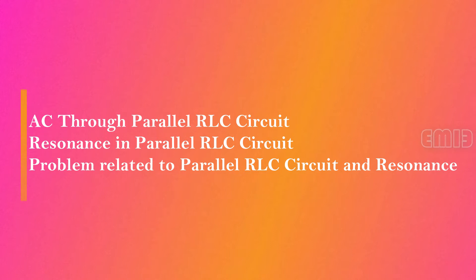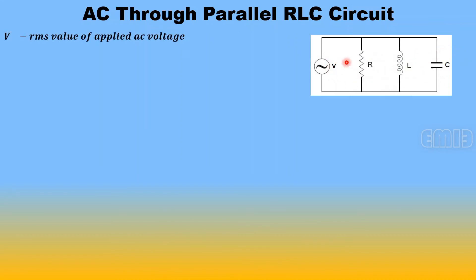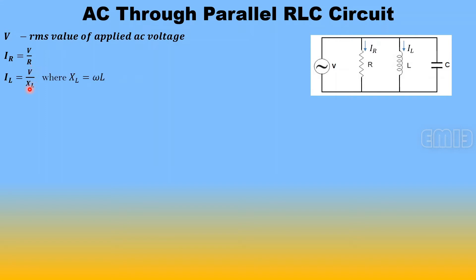This circuit is a parallel RLC circuit with a pure resistance R, pure inductance L, and a capacitance C. An alternating voltage V is connected in parallel with these three components. A current IR will flow through the resistance with value V/R, an inductive current IL will flow through the inductance with value V/XL where XL equals omega·L, and the current through the capacitance is V/XC where XC equals 1/(omega·C).